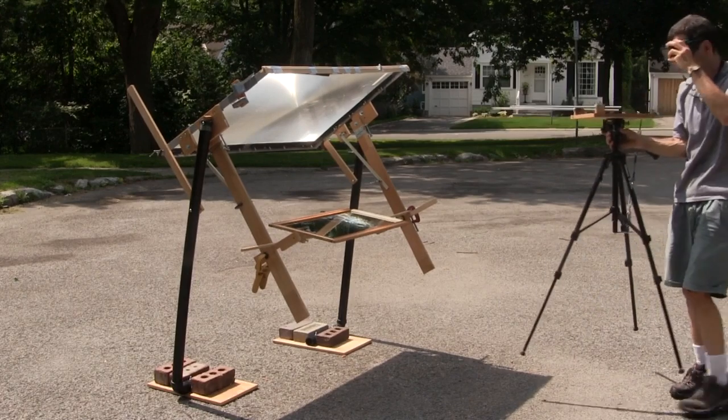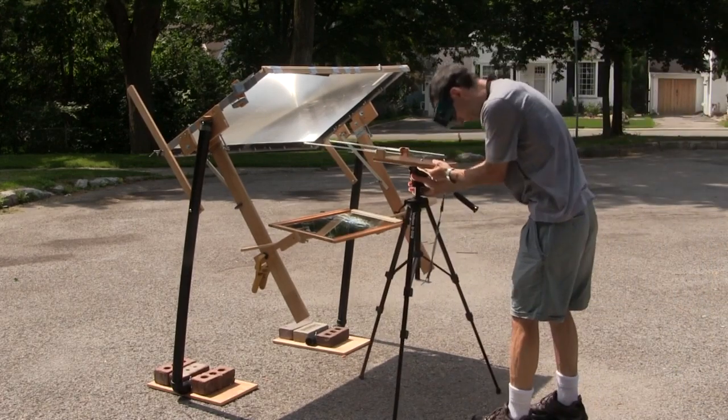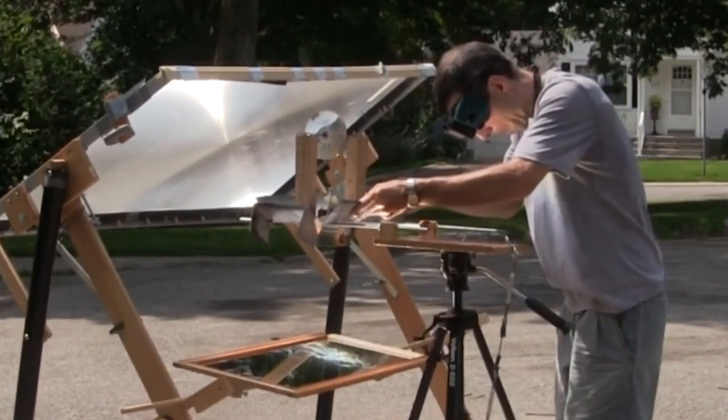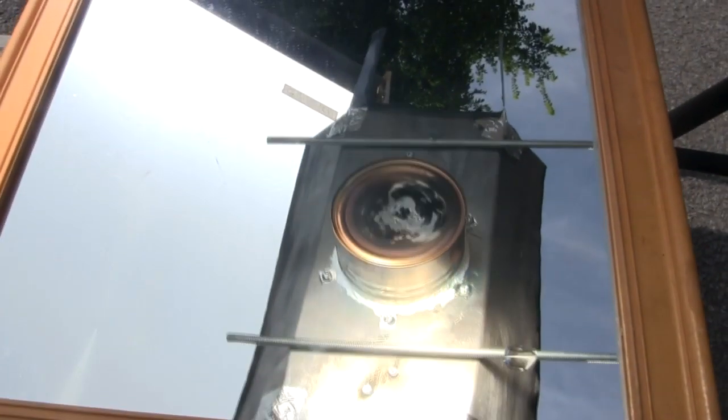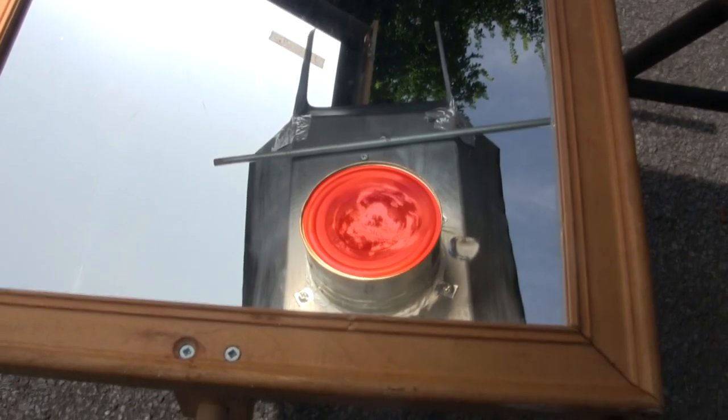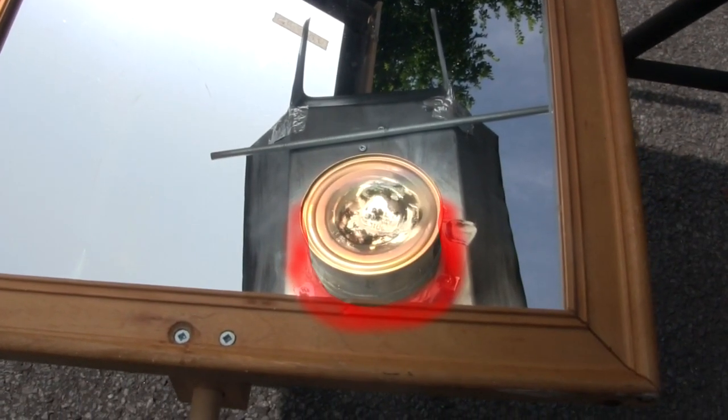Next, I put the stand in place that will hold the sterling engine. And finally the sterling engine. To make sure the sunlight is being concentrated onto the cylinder, I look down into the big mirror. I want sunlight on the bottom of the big cylinder here, and not up here on the top plate.